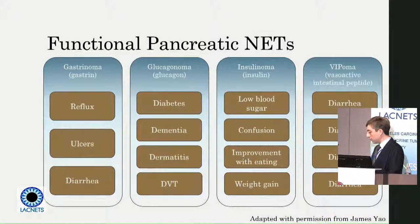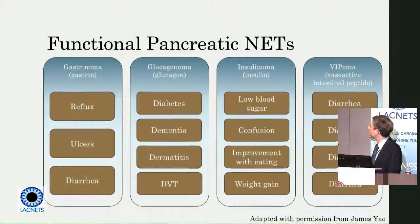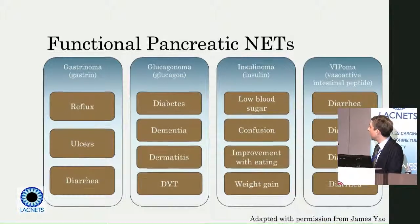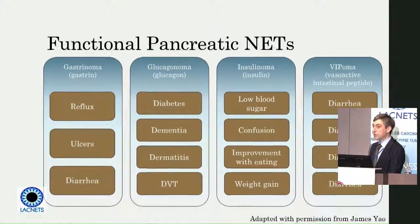Since all these different things like gastrin, which makes you secrete acid, or glucagon and insulin, which affect glucose metabolism, and VIP that can cause peristalsis in the gut, these all have sort of characteristic syndromes that can arise. Now, I want to take a moment and point out what is not on the slide, which is actually carcinoid syndrome.